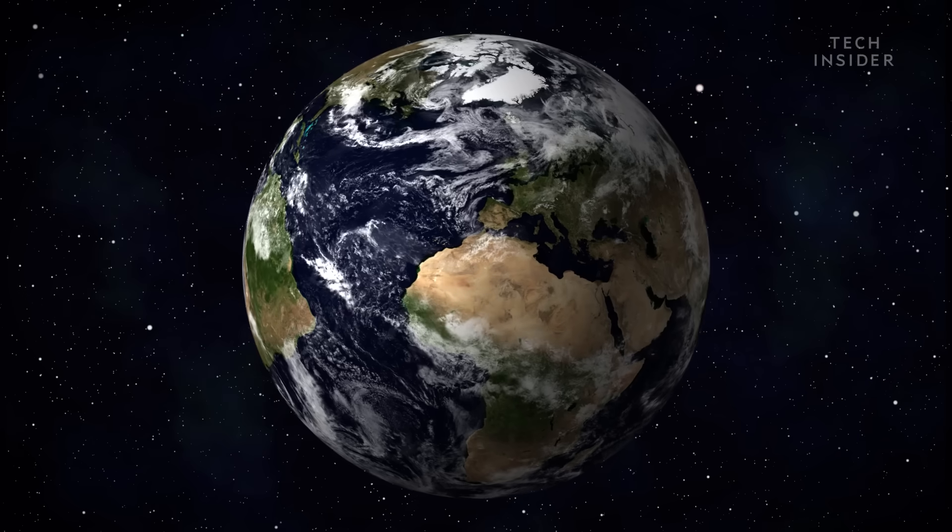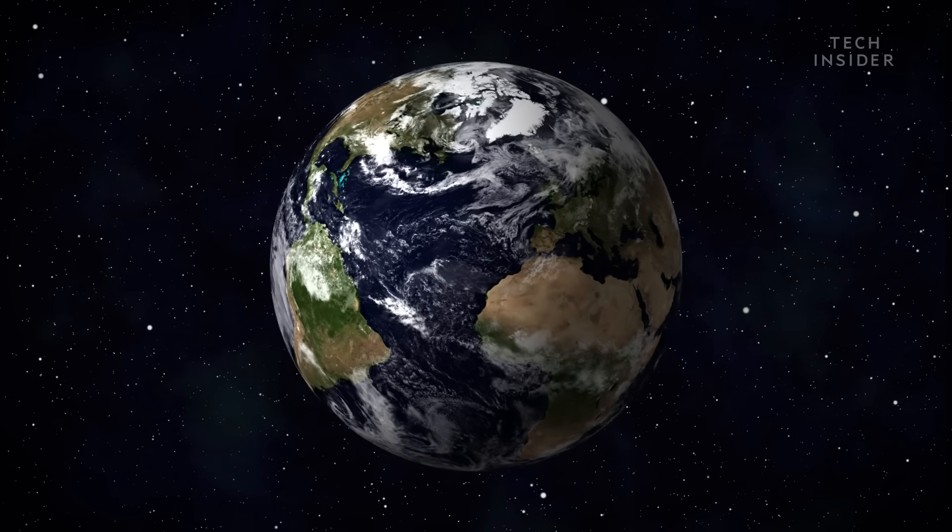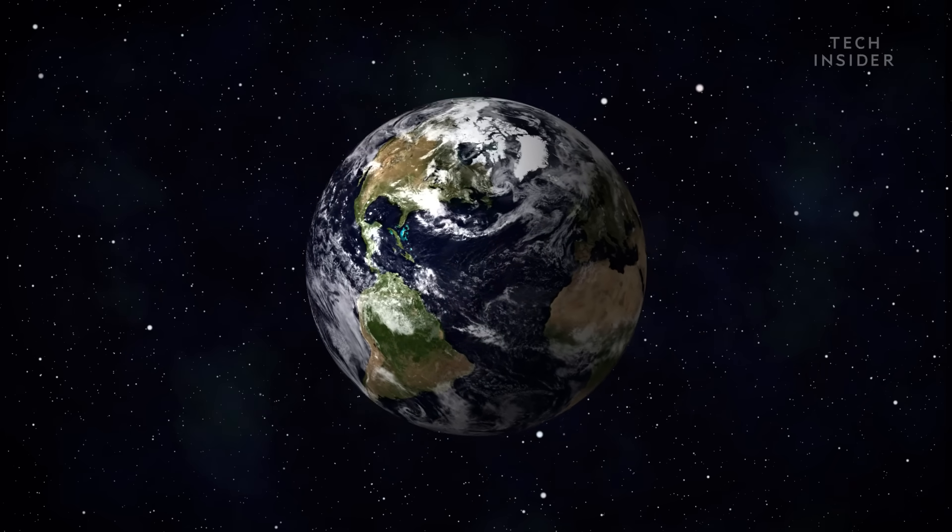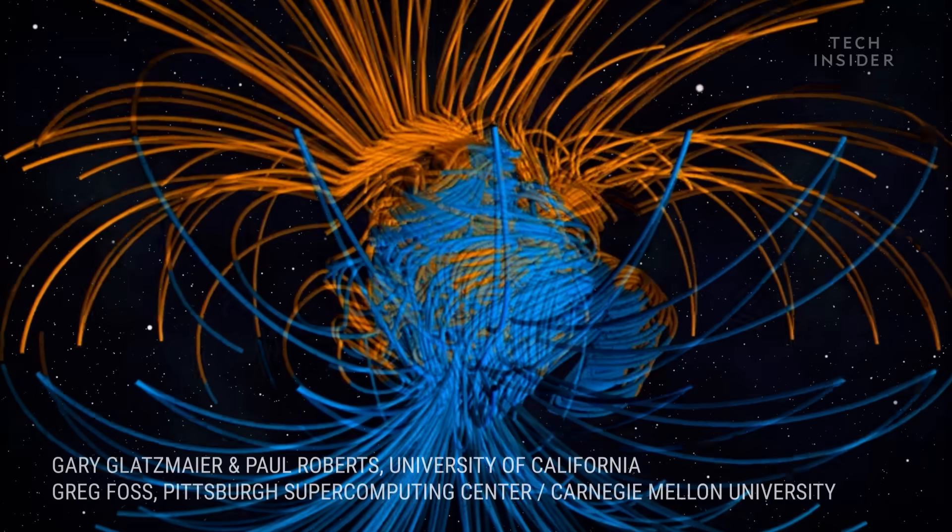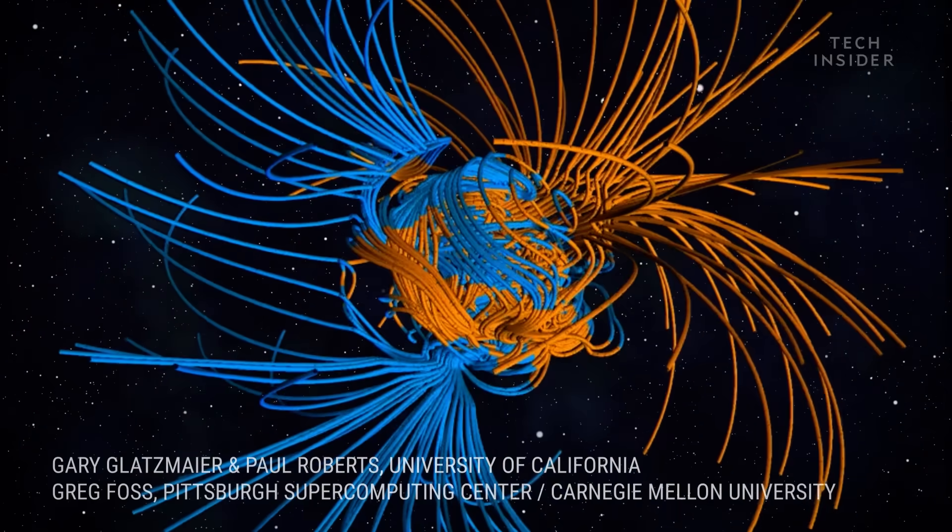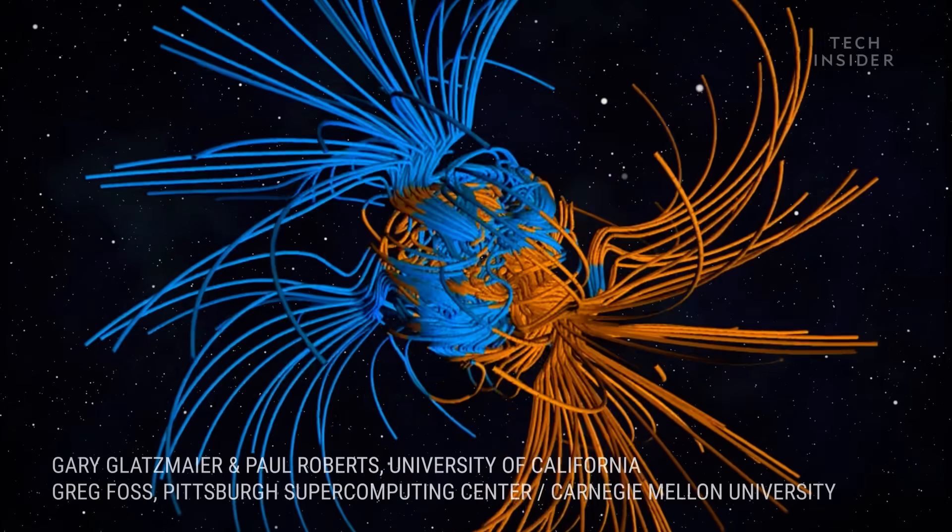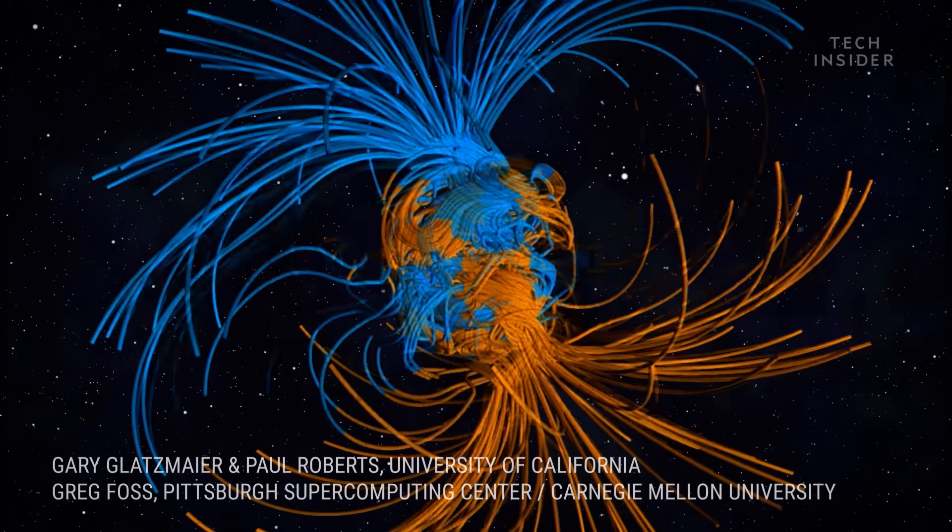Now, you might think that eight poles must be better than two. But the reality is that multiple magnetic fields would fight each other. This could weaken Earth's protective magnetic field by up to 90 percent during a polar flip.